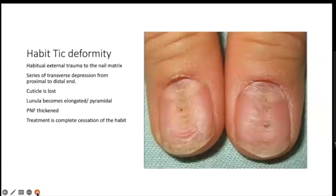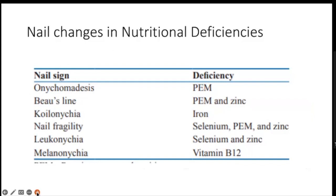Habit tic deformity is a habitual external trauma to the nail matrix. It presents as a series of transverse depressions from the proximal to the distal end. The cuticle is lost, the lunula becomes elongated and pyramidal, and the proximal nail fold becomes thickened. Treatment is complete cessation of the habit. This is mainly seen in children in their teenage years.